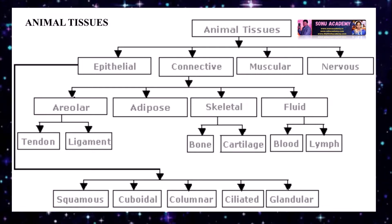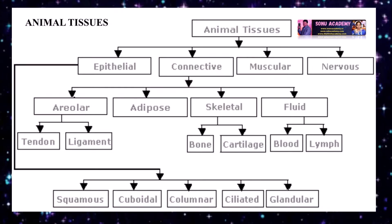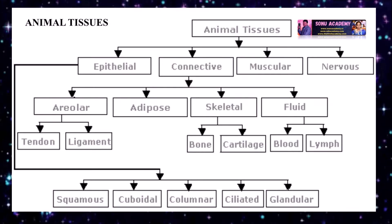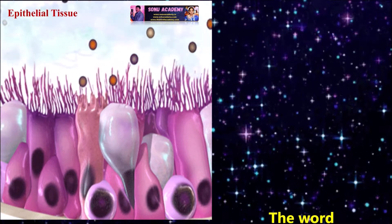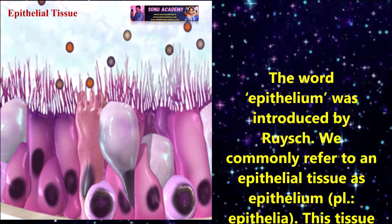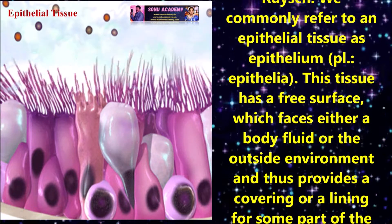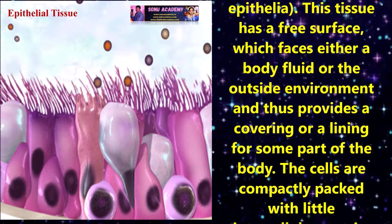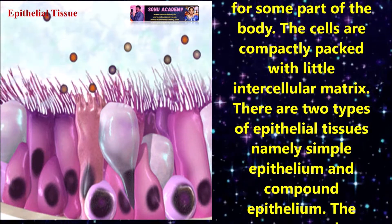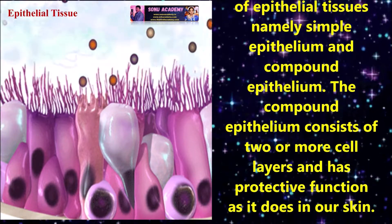Now let us discuss in detail about these animal tissues. The structure of cells varies according to their function. Therefore, tissues are broadly classified into four main types: epithelial tissue, connective tissue, muscular tissue and neural tissue. The word epithelium was introduced by Ruysch. Epithelial tissue has a free surface which faces either a body fluid or the outside environment, providing a covering or lining for some part of the body. The cells are compactly packed with little intercellular matrix. There are two types: simple epithelium and compound epithelium.